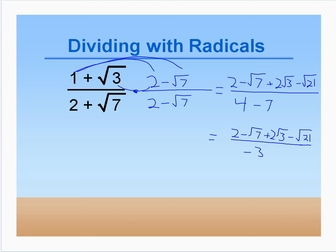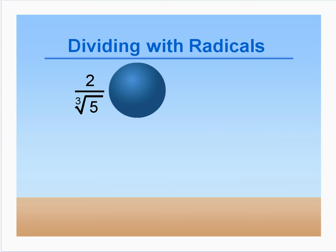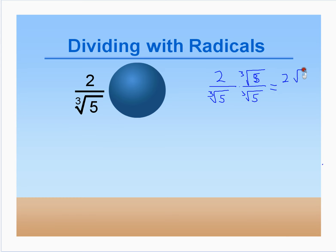Now we'll look at problems where the denominator is not a square root. Our first guess might be to multiply by the cubed root of 5 over the cubed root of 5. But that gives 2 times cubed root of 5 over the cubed root of 25 — we still have a radical in the denominator. This is a cubed root, not a square root, so we can't do the same thing we've always done.